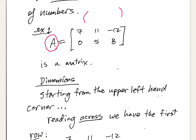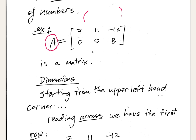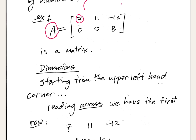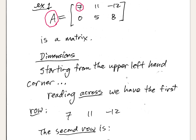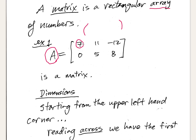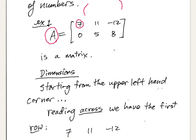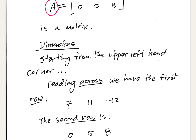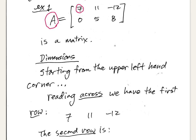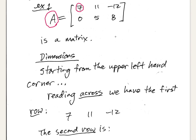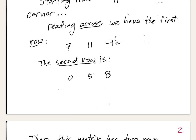Now we need to talk about the dimensions of the matrix. Starting from the upper left-hand corner, like reading a book, reading across gives us the first row: 7, 11, -12. The second row is obtained by going down and reading across: 0, 5, 8. So this particular matrix has two rows.